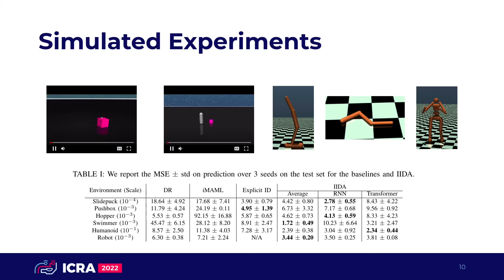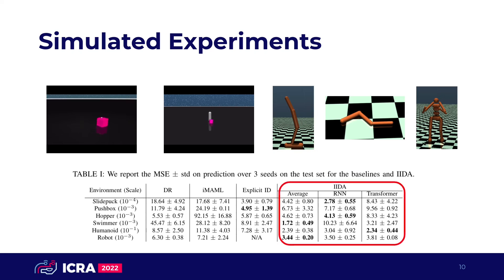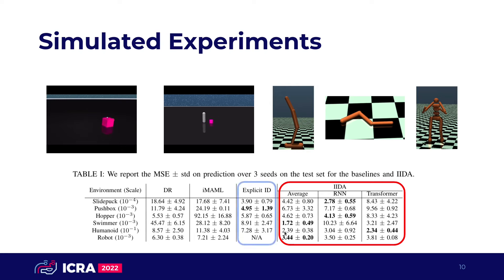We test IDA on a number of simulated MuJoCo tasks with unseen and unknown environment dynamics. We can see that IDA achieves lower reconstruction error on trajectories in environments with previously unseen dynamics parameters, even outperforming models with explicit access to the ground-truth dynamics parameters.